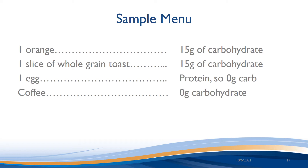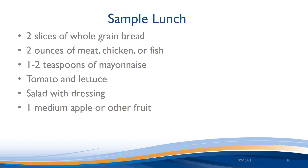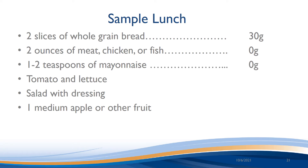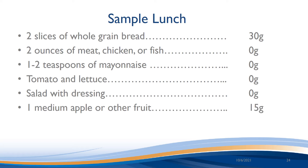If you added another slice of toast, it would add another 15 grams for a total of 45 grams. Let's try another example from the sample menu. Two slices of bread is 30 grams. Two ounces of fish — no carbs, as this is a protein food. Two teaspoons of mayo — no carbs, as this is an added fat. Tomato and lettuce? No carb. Salad with dressing? No carb — these are vegetables. What about one apple? That would be about 15 grams of carbs. So the only carbs we are counting are from the bread and the fruit, and this adds up to 45 grams of carb. This meal is well balanced with protein and vegetables.